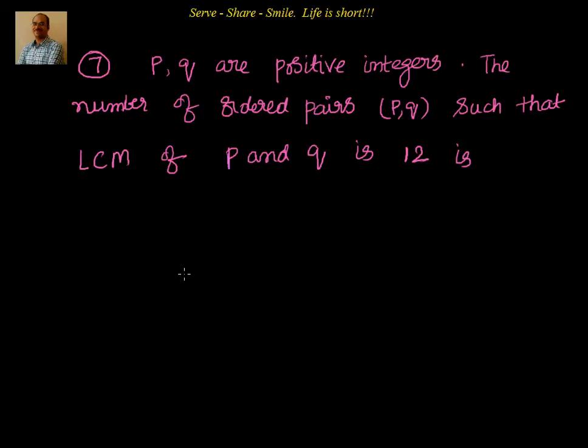Hello friends, welcome. Let's go through this problem: P and Q are positive integers. The number of ordered pairs such that LCM of P and Q is 12 — how many are there? So what do we know about the LCM of two numbers?